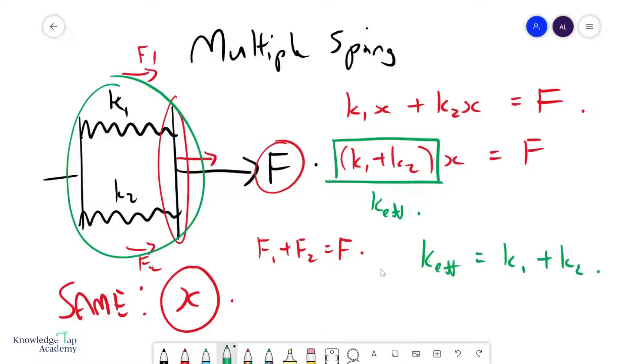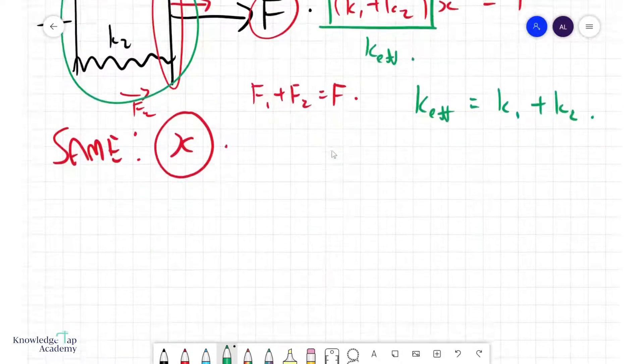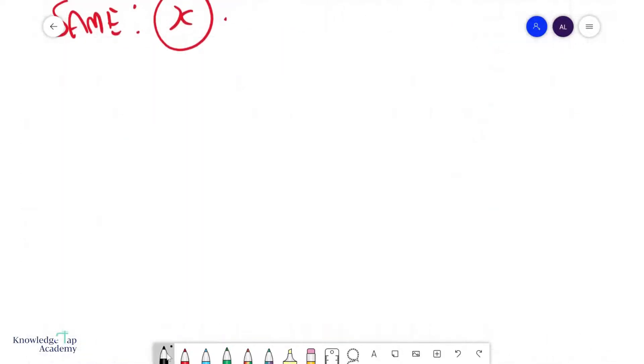Now let us look at series arrangements. So I could have a spring over here and another spring over here. Let's call this k1, k2, and I pull this system with a force f.